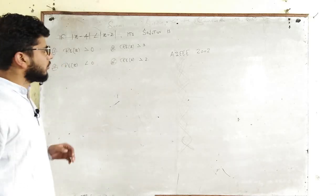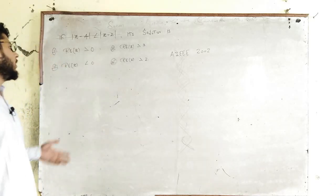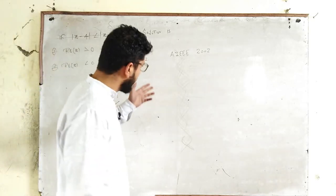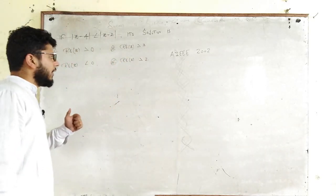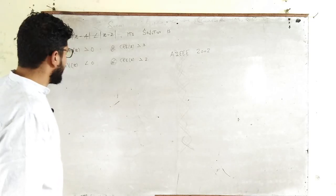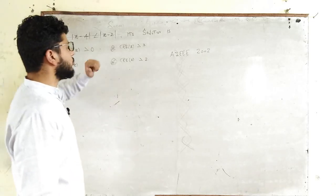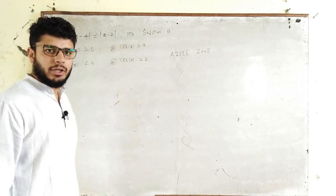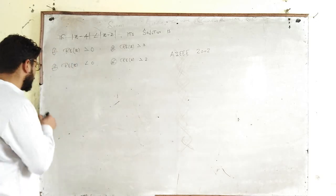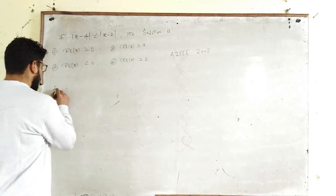One more question from complex numbers and quadratic equations. If the inequality |z - 4| is less than |z - 2|, then what is its solution? This is a complex number inequality. It's a very easy question. We'll go for the solution directly.